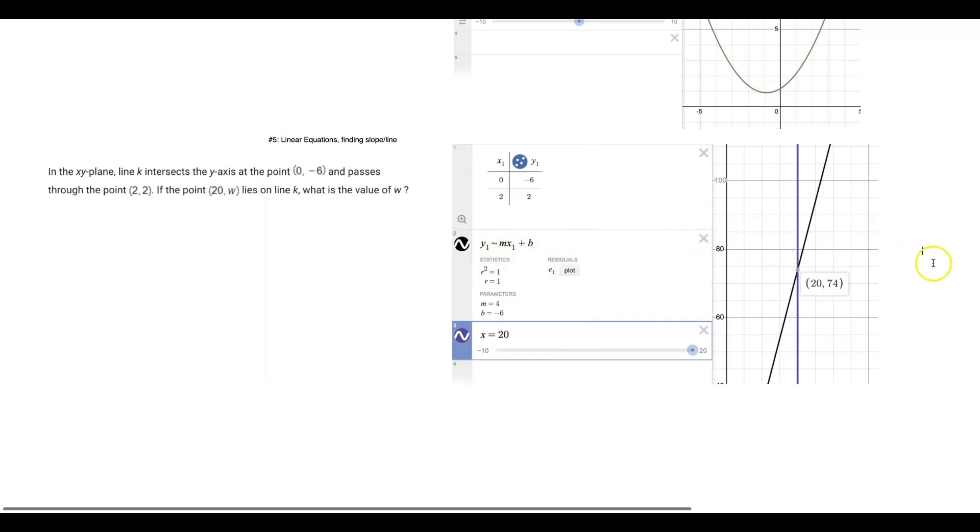You have this little weird symbol here that indicates a regression mx1 plus b. This is the standard form for a linear equation. Now, if you were dealing with a quadratic, then you would just modify it.